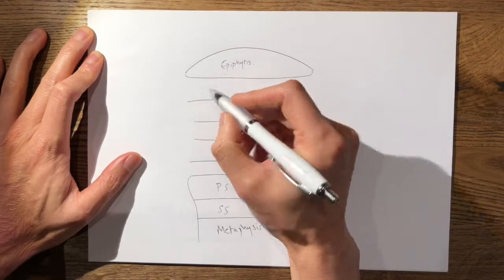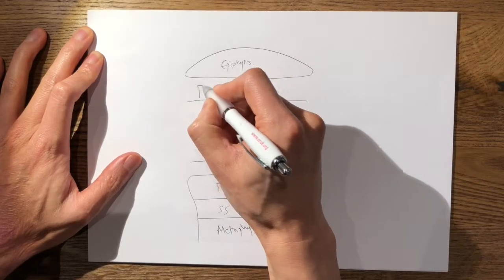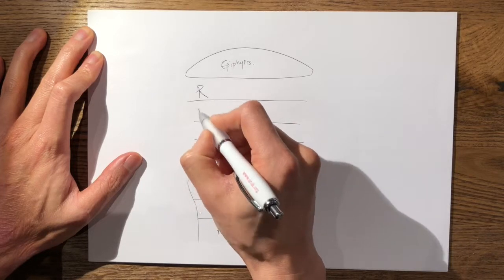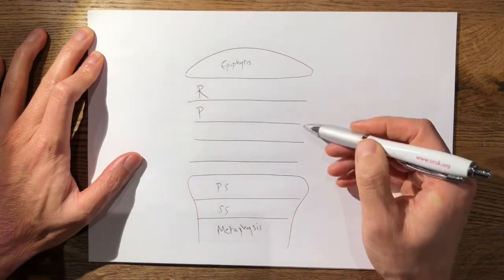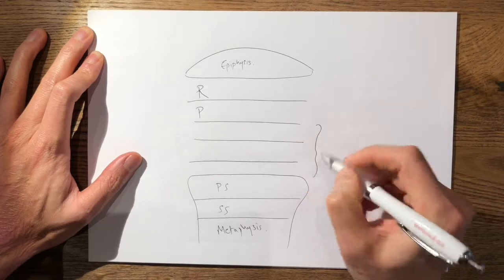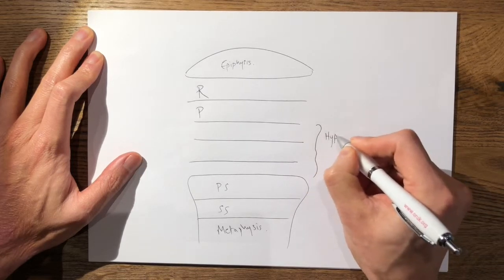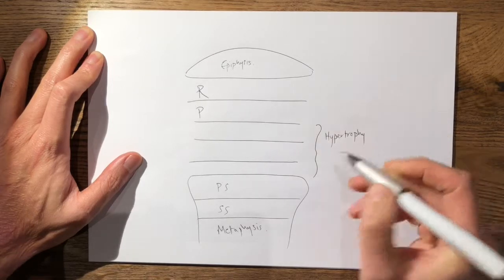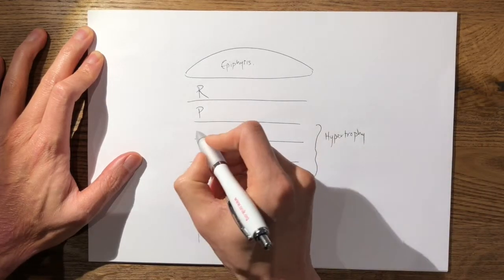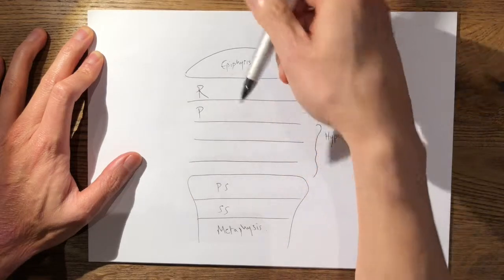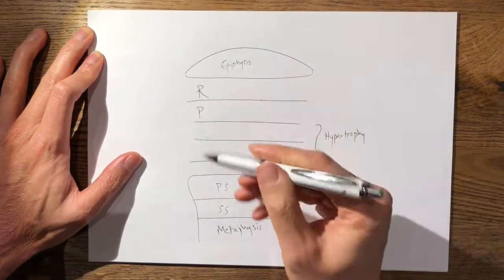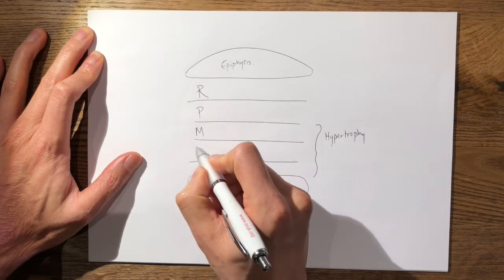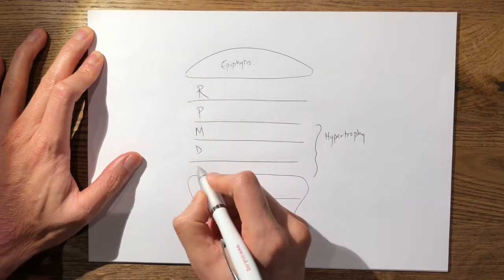So at the top you have your reserve layer, the zone of proliferation, and then the last three zones are known collectively as the zone of hypertrophy, which is the weakest layer of the growth plate. As the chondrocytes come from the epiphysis down to the metaphysis they start to mature, they degenerate and then they calcify.